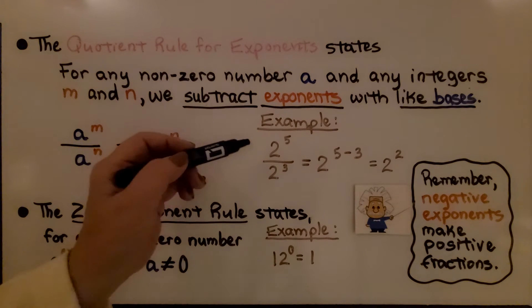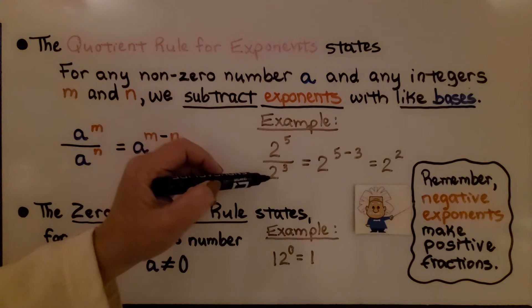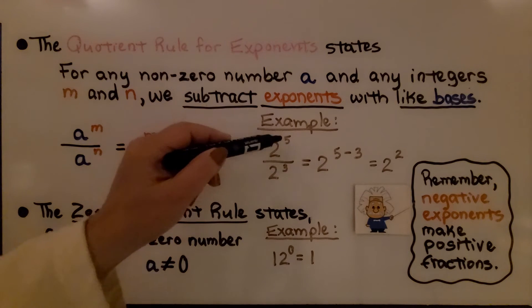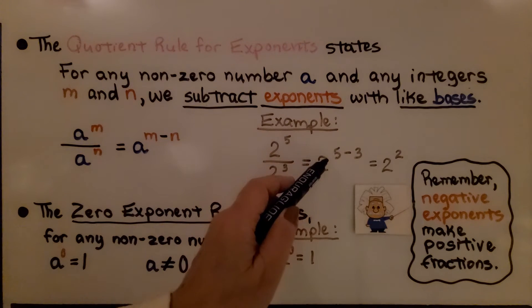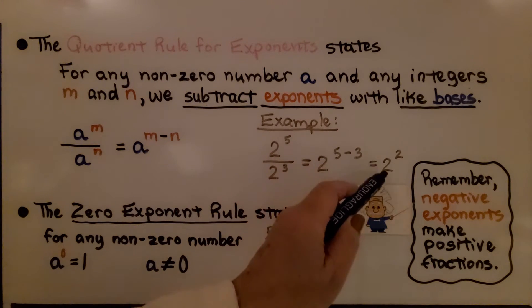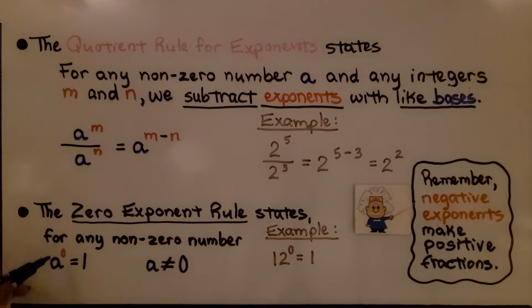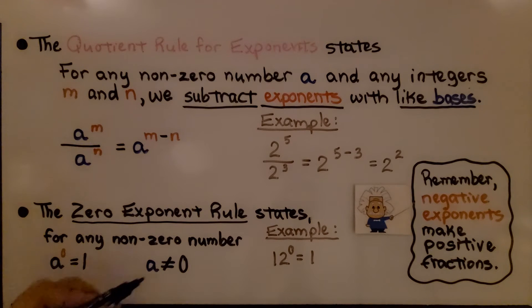An example: two raised to the fifth power over two raised to the third power — we just do five minus three and get two to the second power. The zero exponent rule states that for any non-zero number, a raised to the zero power equals one. So whatever a is, if it's raised to the zero power, it equals one, as long as a is not zero.